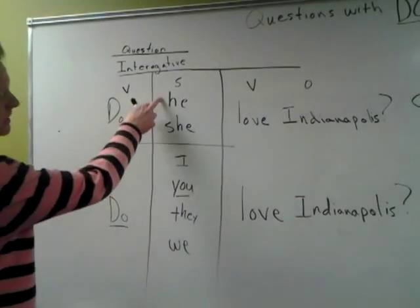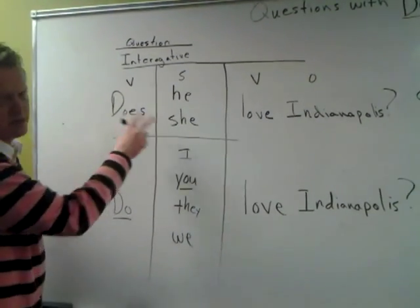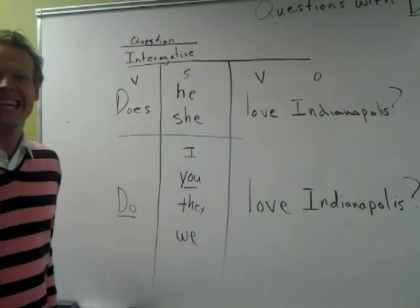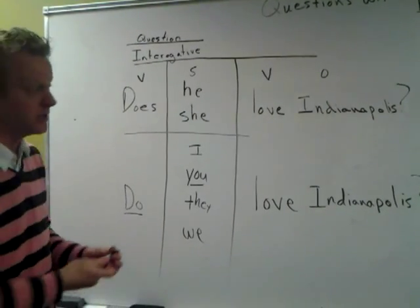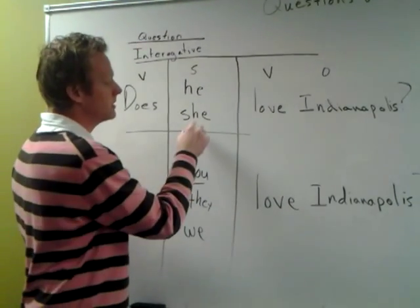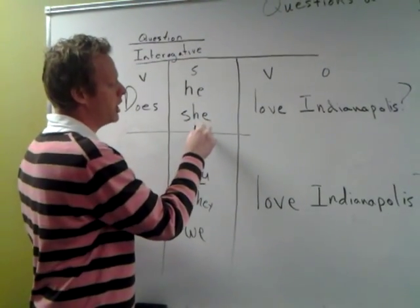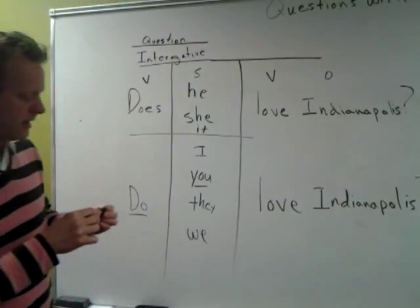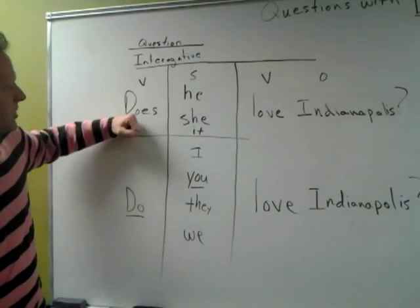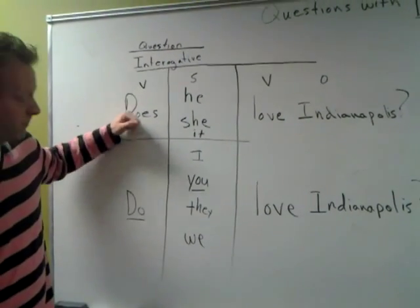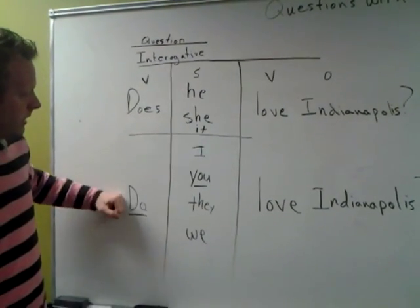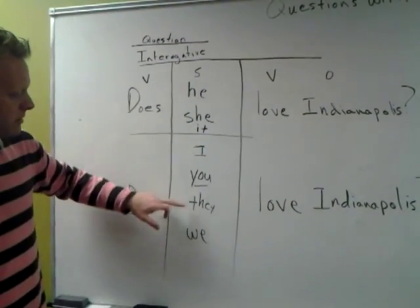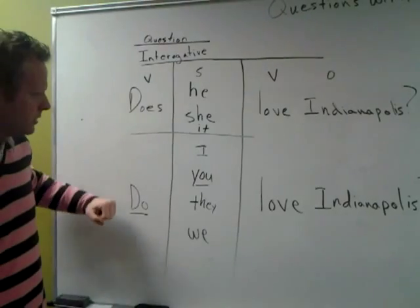So when you're using HE, SHE, and IT — you could stick IT here if you're talking about a dog or something — we always use DOES. Down here with I, YOU, THEY, WE, we use DO.